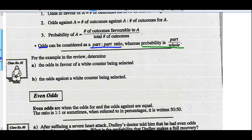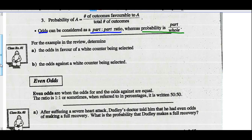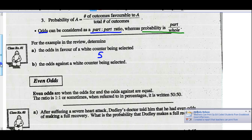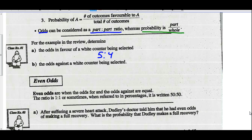For the example in the review, determine the odds in favor of a white counter being selected. Well, if you recall, there were five white counters, which happened to be not black. So the part that's favorable is five, as opposed to the part that's not favorable, four. So that's your part-part ratio. The odds in favor of a white counter being selected are five to four. The odds against, there are four not white counters, and there are five white counters. So it would be a part-part ratio of four to five.